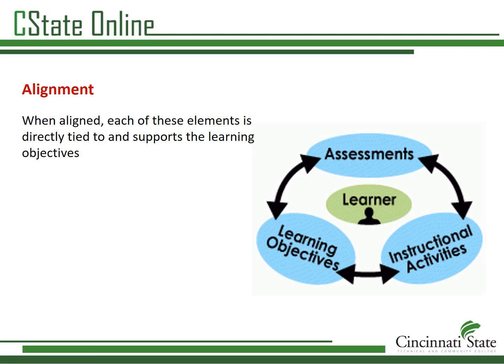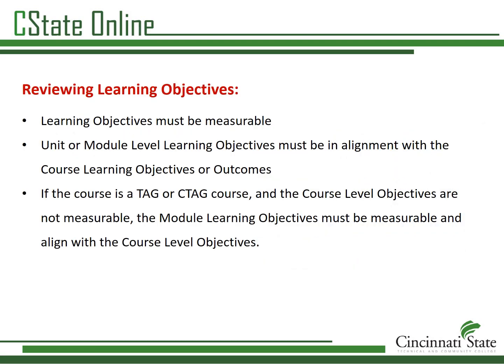One of the most important roles a subject matter expert plays in the process is to check for alignment between the course learning objectives, module or unit learning objectives, instructional materials, course activities, and assessments. All of the alignment standards are worth three points and considered essential. In an online course, each unit or module will have learning objectives that support the course level learning objectives or outcomes. Before alignment can be determined, the course and module learning objectives must be both measurable and in alignment with each other. In the following section of this tutorial, I will discuss measurability and alignment.